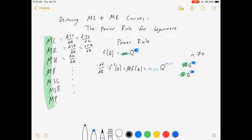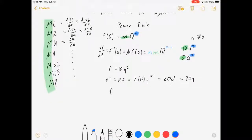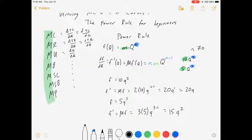So to these two examples, if f equals 10q squared, then f prime or marginal f is equal to 2 times 10 times q to the 2 minus 1, which is 20q to the 1, which is 20q. All right, there's your power rule in a nutshell.